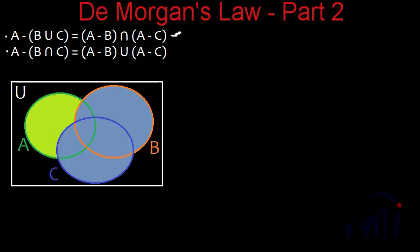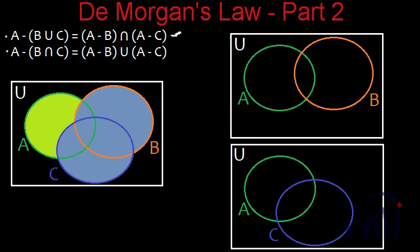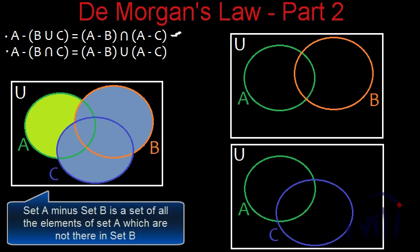Now let's discuss the right hand side of the law. To understand it better, I am going to draw two more Venn diagrams. In the first diagram we have set A and set B, and in the second we have set A and set C. The first part of the right hand side says A minus B, which is the elements of set A which are not in set B — this area represents A minus B.